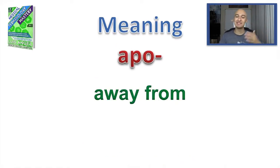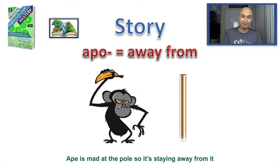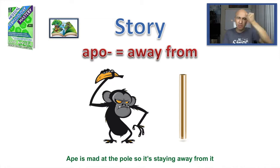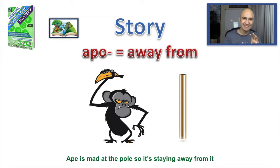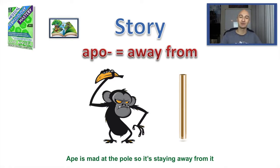Next one is apo, which means away from. Apo — as in apochromatic, meaning free from spherical and chromatic aberrations. My story for apo, which means away from, is: an ape is mad at the pole, so it's staying away from it. Apo — ape, pole. You can see the story I'm creating. Just ask yourself: what does this remind me of? That's the number one question to ask when creating a memory story.